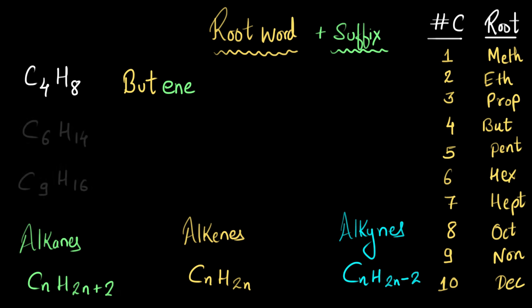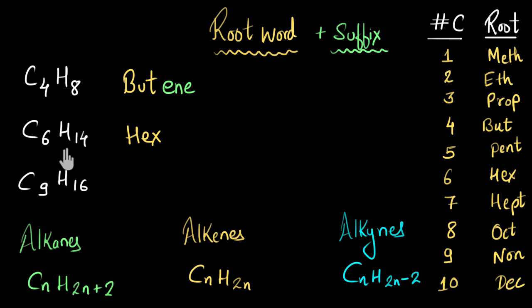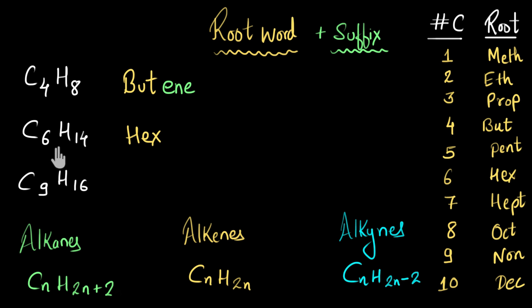Let's do a couple more examples. This compound has 6 carbon atoms, so the root word is 'hex'. To find the suffix, I check: 6 times 2 is 12, but the hydrogen number is 14 — that's 2 more than twice the carbon count, and 2 more than twice means alkane. So the suffix is '-ane', making this compound 'hexane'.